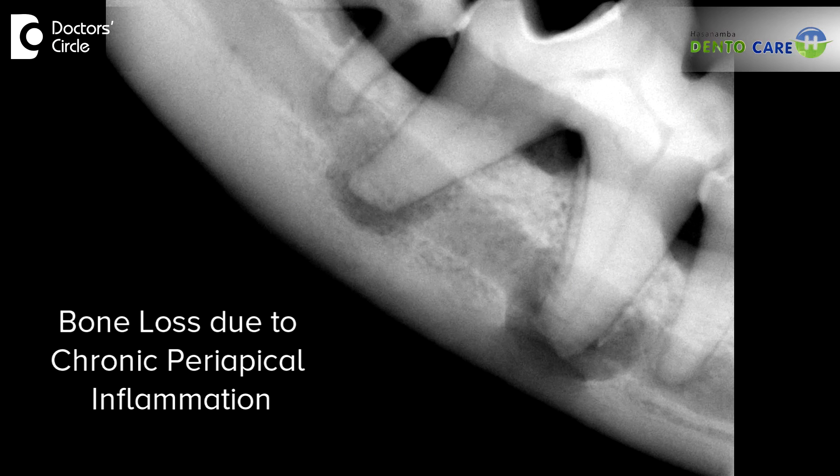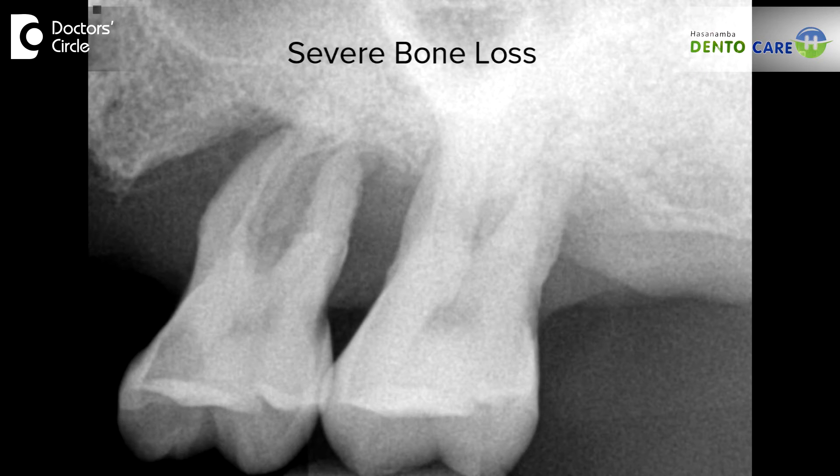If there is bone loss, or if there is continuous or chronic inflammation at the root tip of the tooth and it is unfeasible to save the tooth, it can go for extraction. But depending on the bone content, the surrounding tissues, and the mobility of the tooth, we can definitely save the tooth by performing root canal treatment.